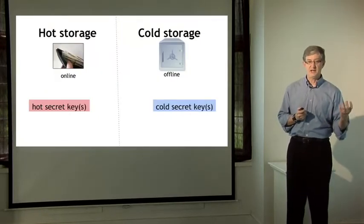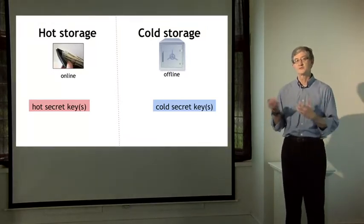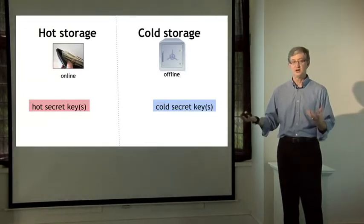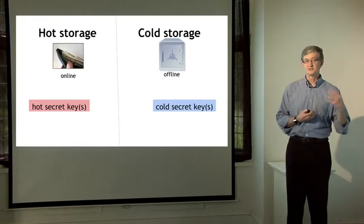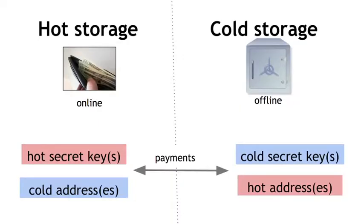You're going to have to have separate secret keys to control the coins on the hot side and the cold side. The whole point of cold storage is that the coins in cold storage are not vulnerable to attack or loss if the hot storage is compromised. And so you need to have separate private keys for hot versus cold storage. Each side needs to know the addresses that the other side is using because you want to be able to transfer money back and forth. Each side knows its own secret keys, and it also knows the addresses at which the other side will accept transfers.